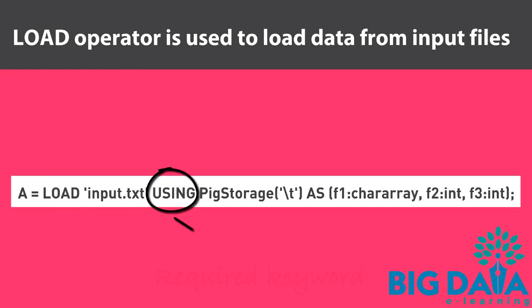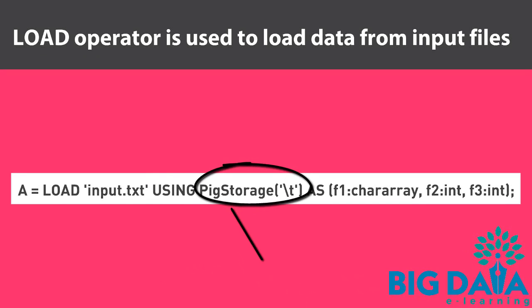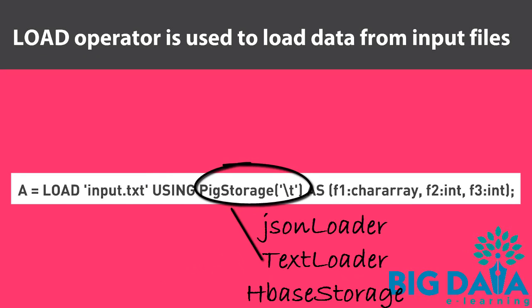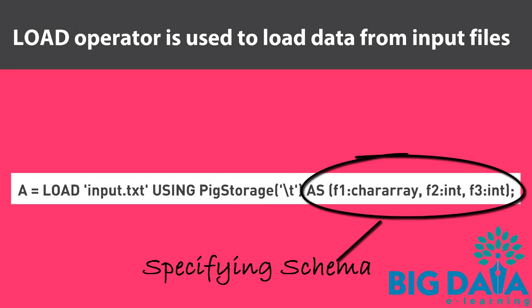Using is the keyword used to specify the load function. Pig storage is the load function which is used when the fields in the input file are delimited by tab. You can also use different other load functions available, such as JSON loader to load JSON data, text loader to load unstructured text files, and HBase storage to load data from an HBase table. The highlighted section is the way to specify the schema for the data. This indicates the first field is assigned with char array data type, and the second and third fields are assigned with int data type. F1, F2, F3 are the user-defined field names.